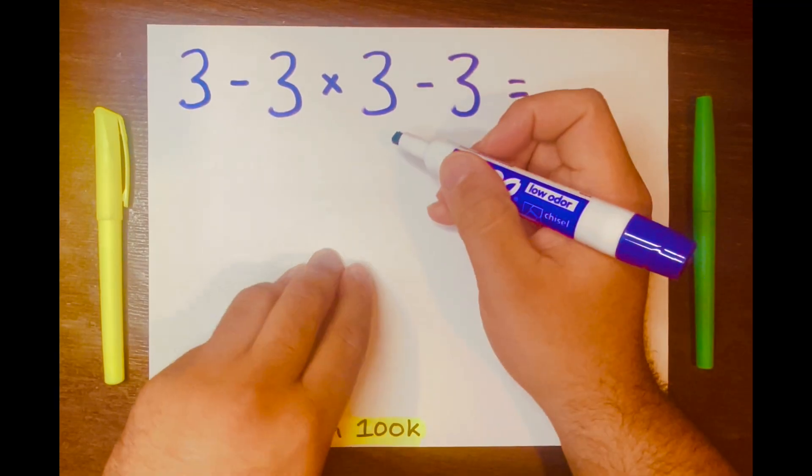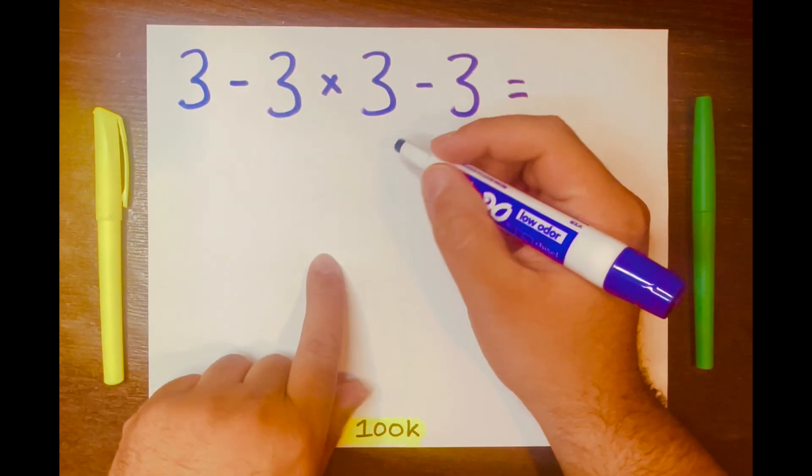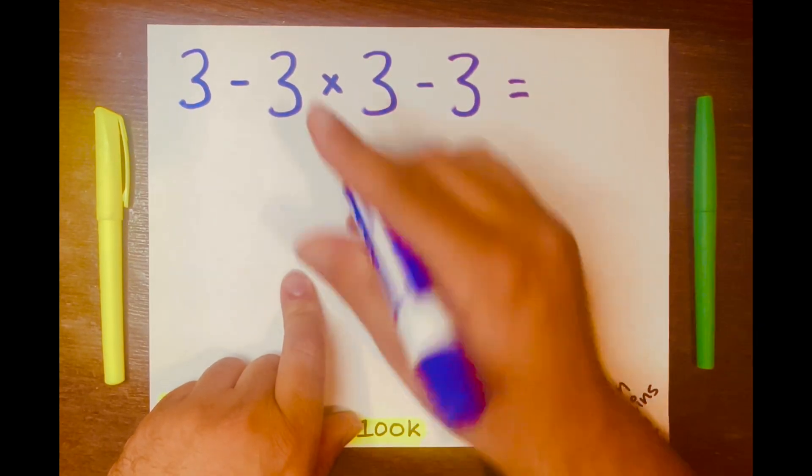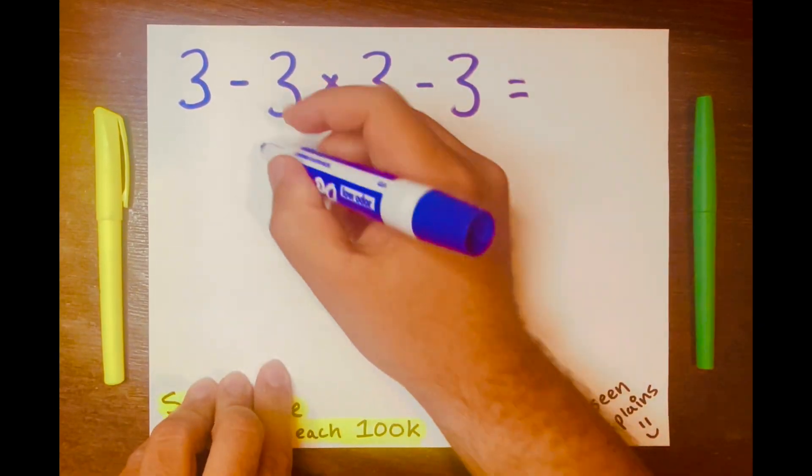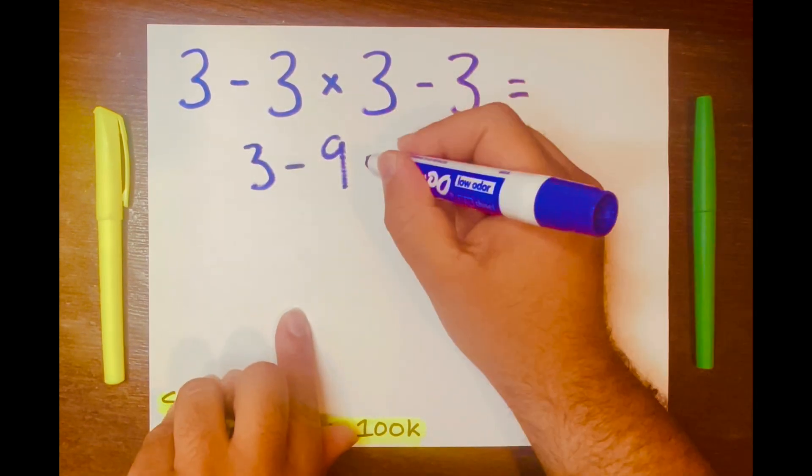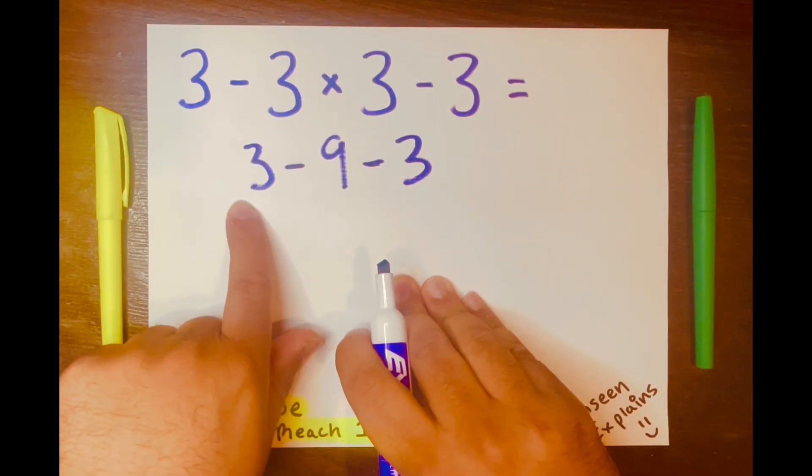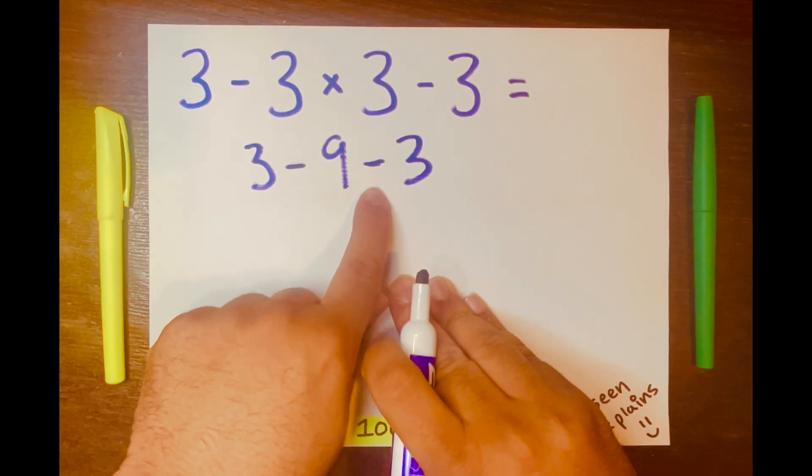So we know that 3 times 3 will go first. So 3 times 3 is 9, and then bring down the minus symbol down, the 3 down, the minus down, and lastly the 3 down. Now we have 3 minus 9 minus 3.